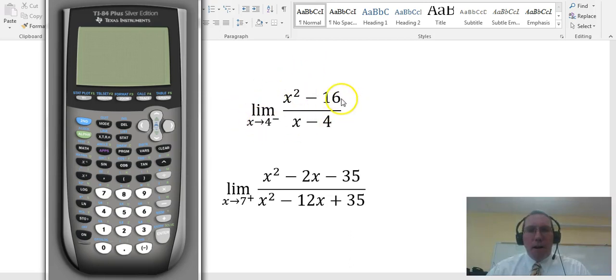So if we want to find the limit of this function right here as x approaches 4 from the left side, what's on the left side of 4? On the left side of 4 is 3.9 and 3.99 and 3.999. So we're getting progressively closer to 4, but we're on the left side of 4. We're going to key those numbers 3.9 and 3.99 and 3.999 into the calculator with this in as a graph.